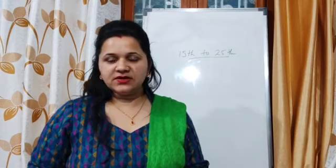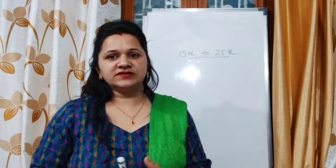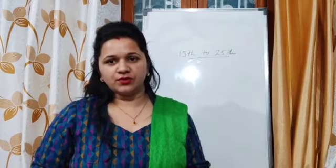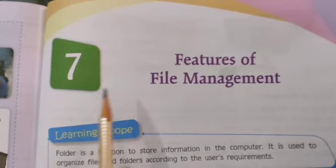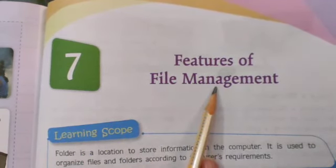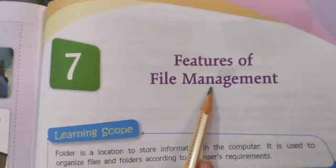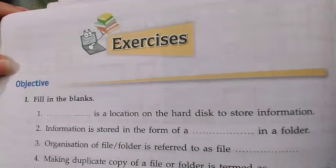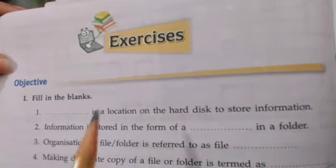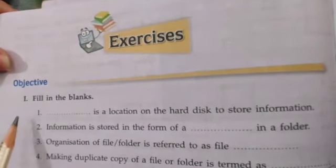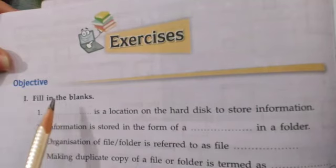Till now we have done with the chapter. In this video, I will be discussing the question answers of the chapter. You have to take out your book. This is your Chapter Number 7, Features of File Management. Today, we are going to solve the question answers — only the objective part of this chapter. Take out page number 116, where the exercise questions are given. Objective part, Question Number 1: Fill in the blanks.